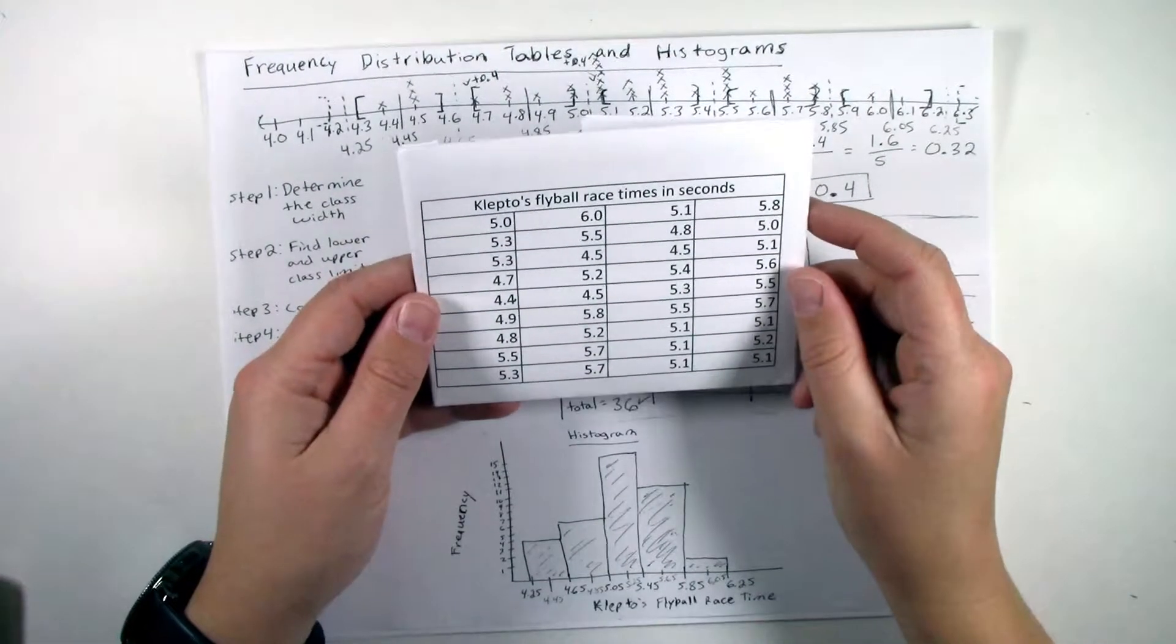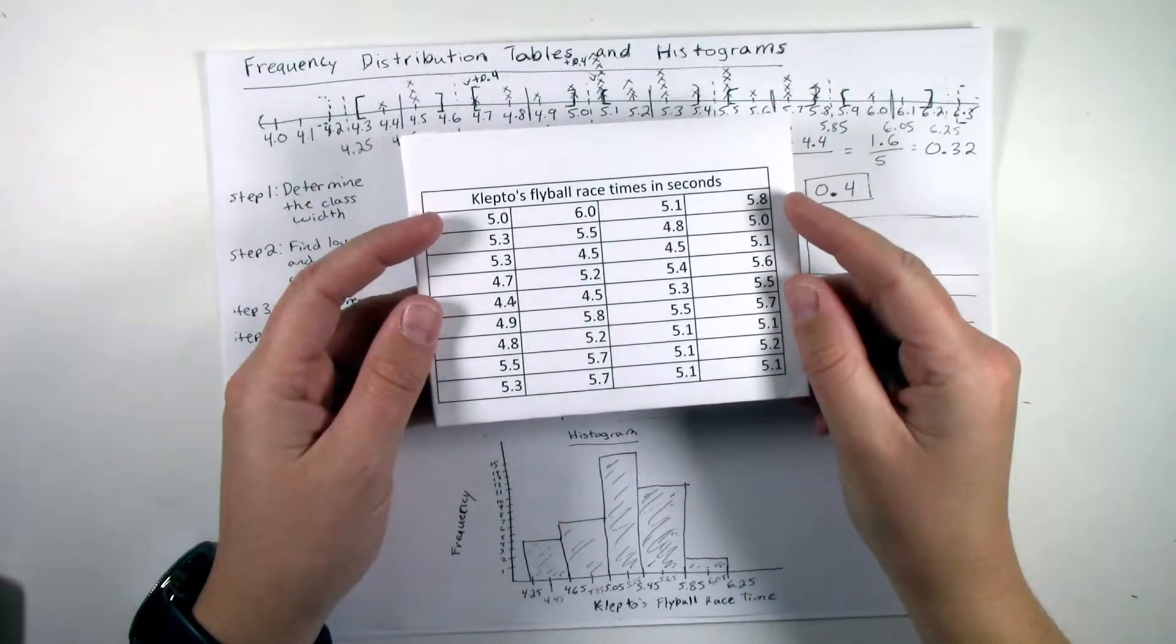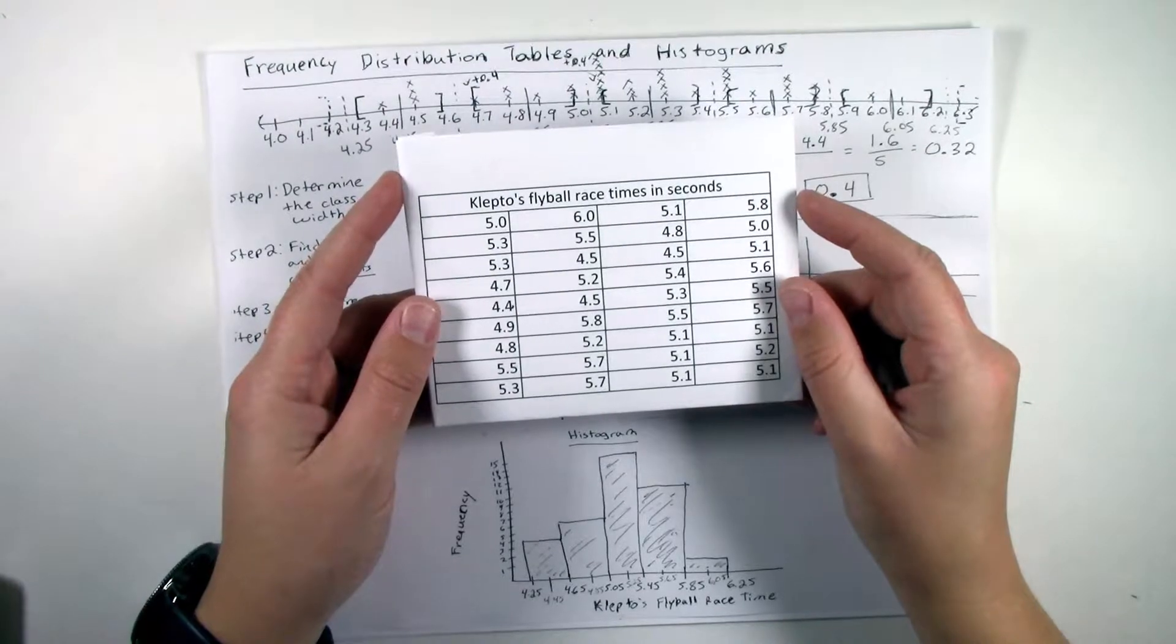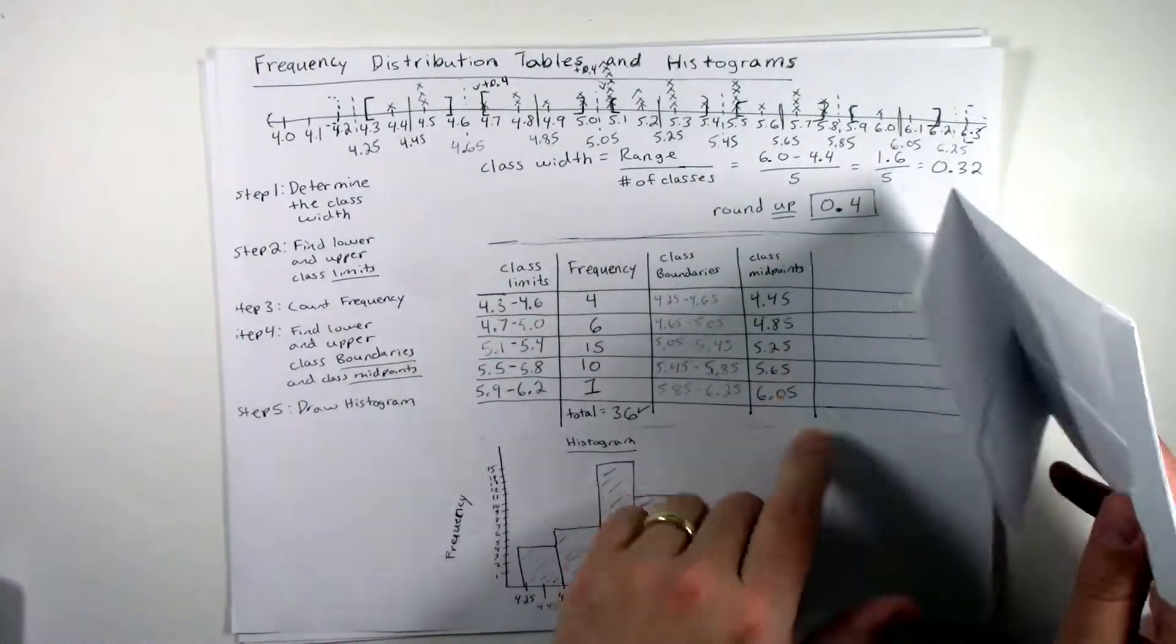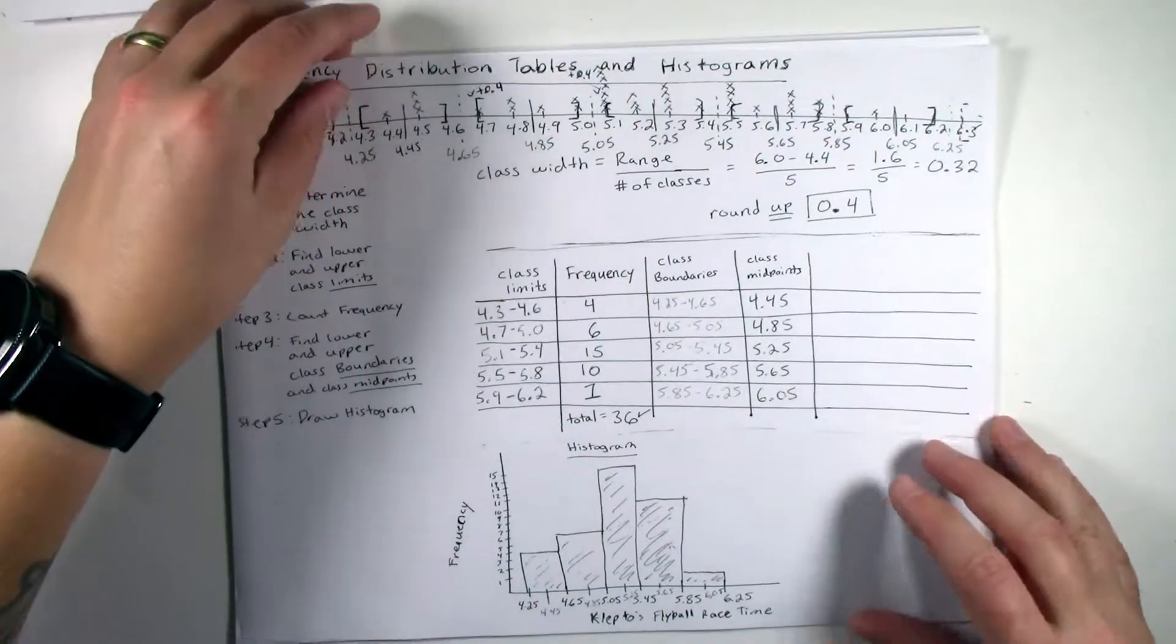Okay, so in the previous video, we talked about Klepto's fly ball race times in seconds, and we constructed a frequency distribution table and histogram. Here is our table, and here is our histogram.